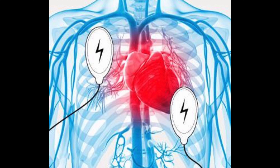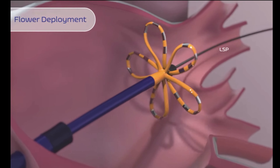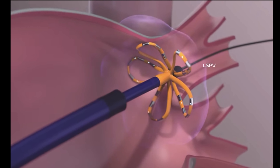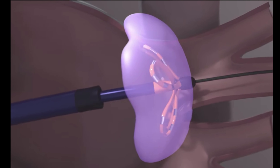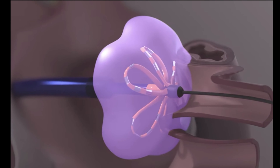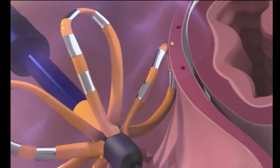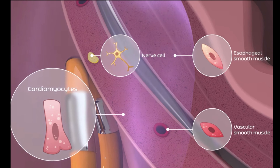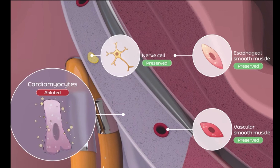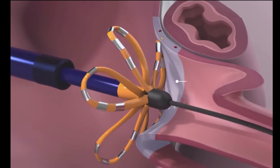Pulmonary vein ablation, also called pulmonary vein isolation, is a cardiac ablation procedure that uses heat or cold energy to create tiny scars in your heart to block abnormal electrical signals and restore a normal heartbeat. It may be an option for people who cannot tolerate medications or when medications are not effective. Since AFib usually begins in the pulmonary veins or at their attachment to the left atrium, energy is applied around the connections of the pulmonary veins to the left atrium during this procedure.